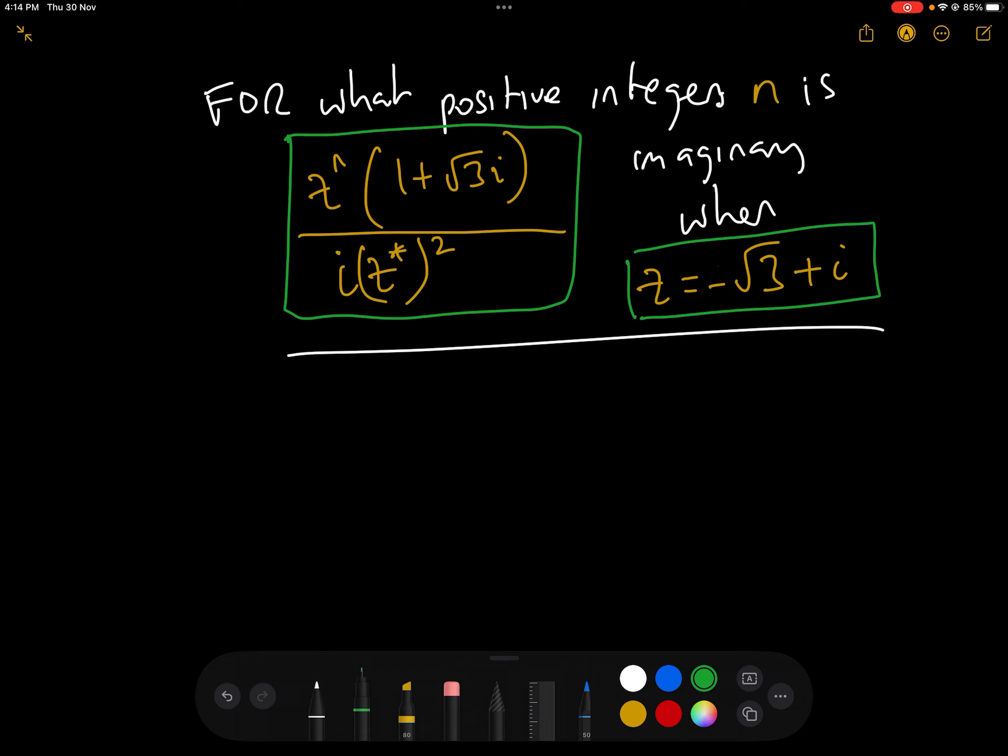Now, in actual fact, these types of questions are quite easy to answer, because all we need to do is look at the arguments, and then we form an equation in the arguments of each of the complex numbers and solve it. Let's just have a look at what they mean by imaginary.